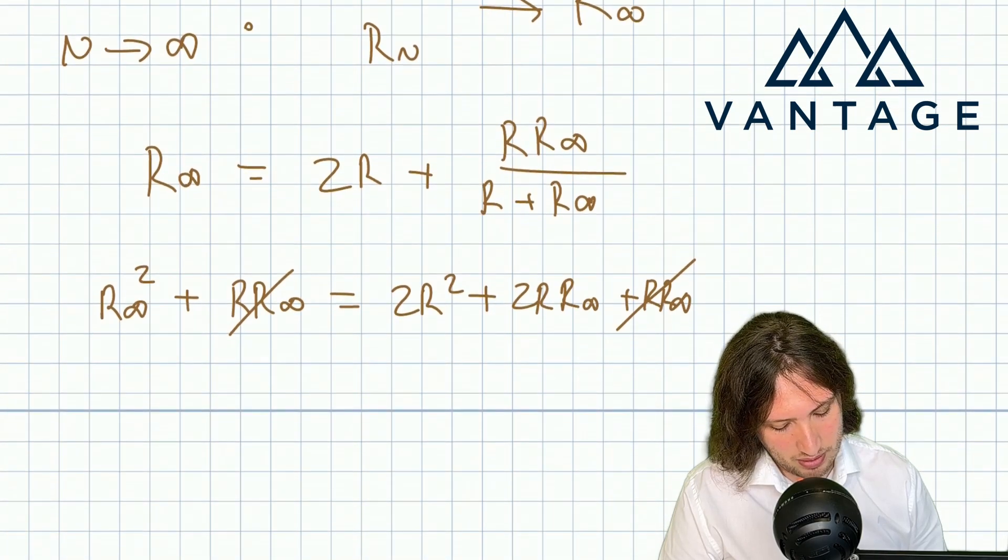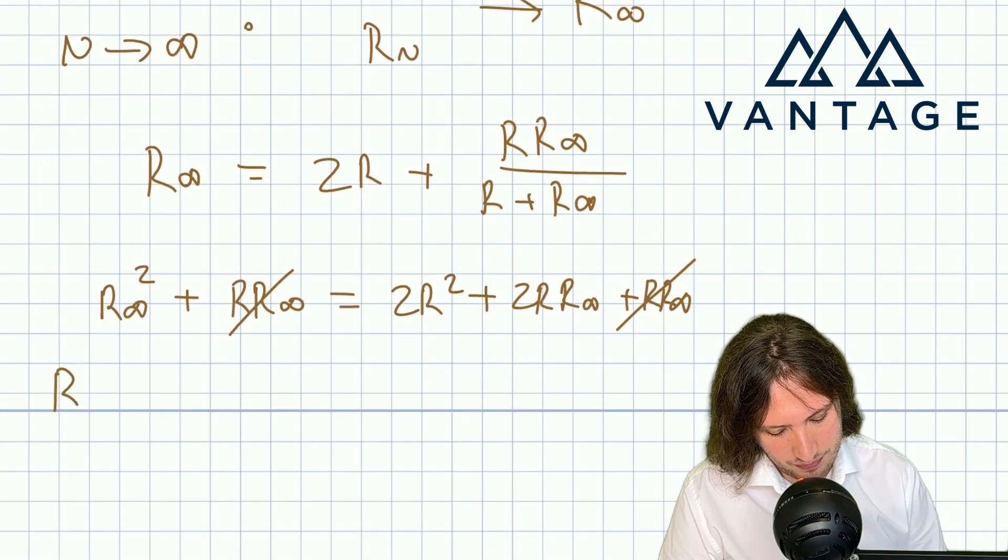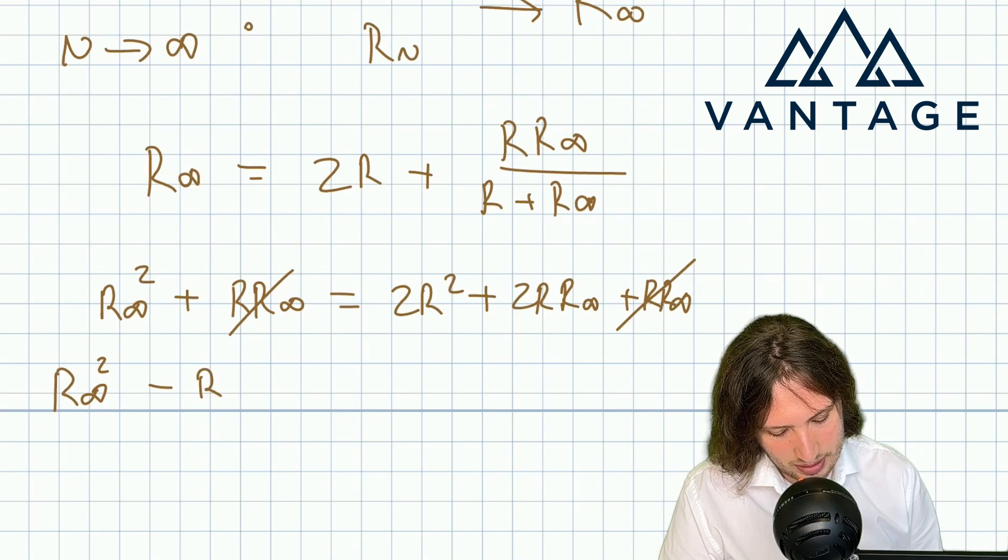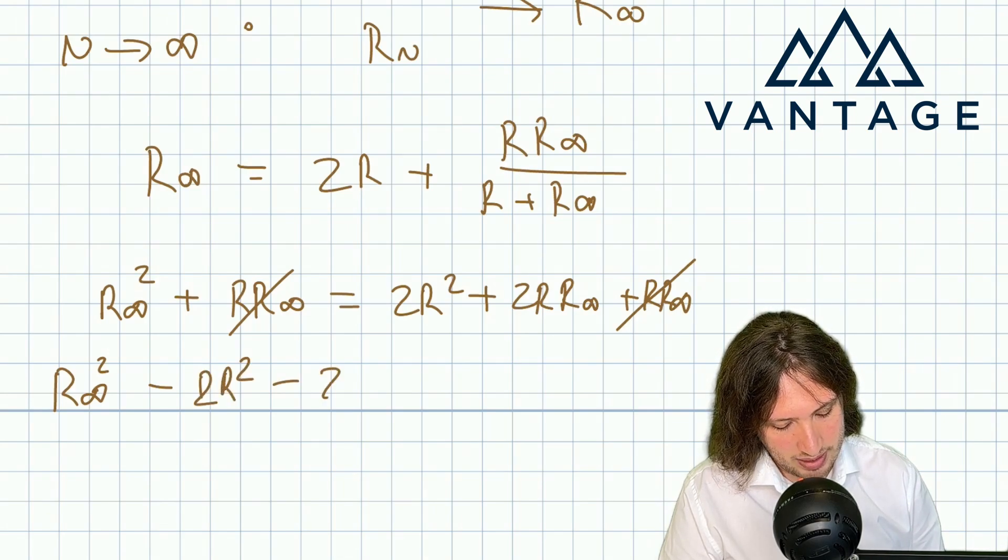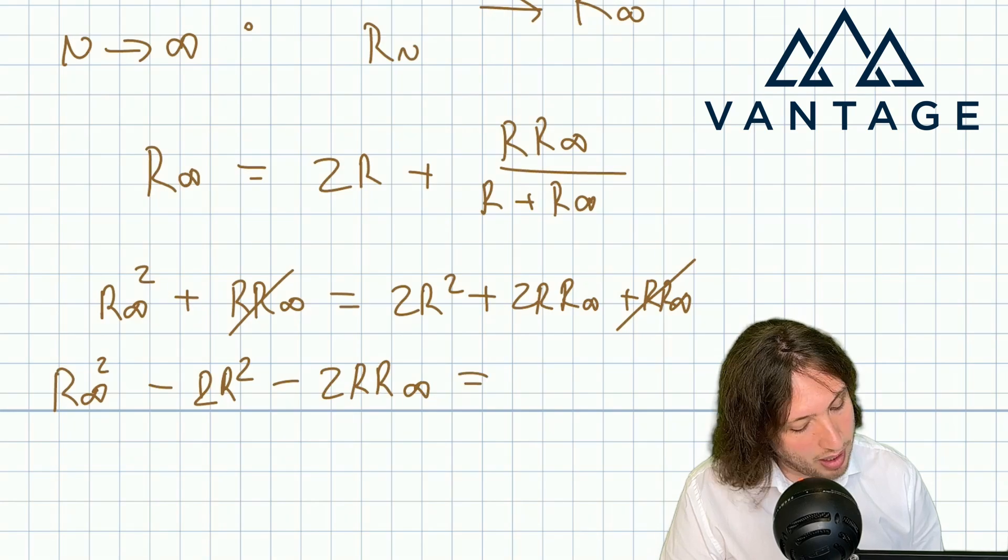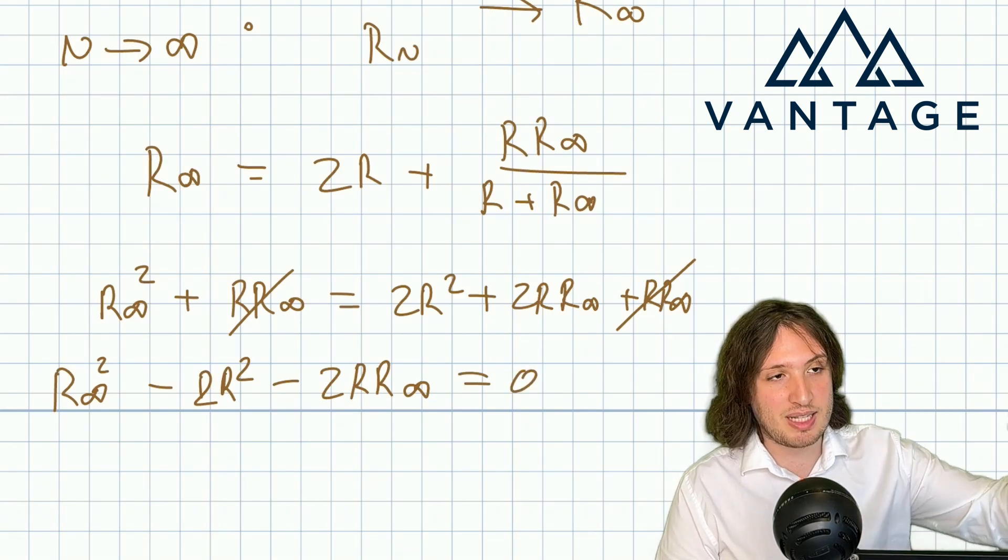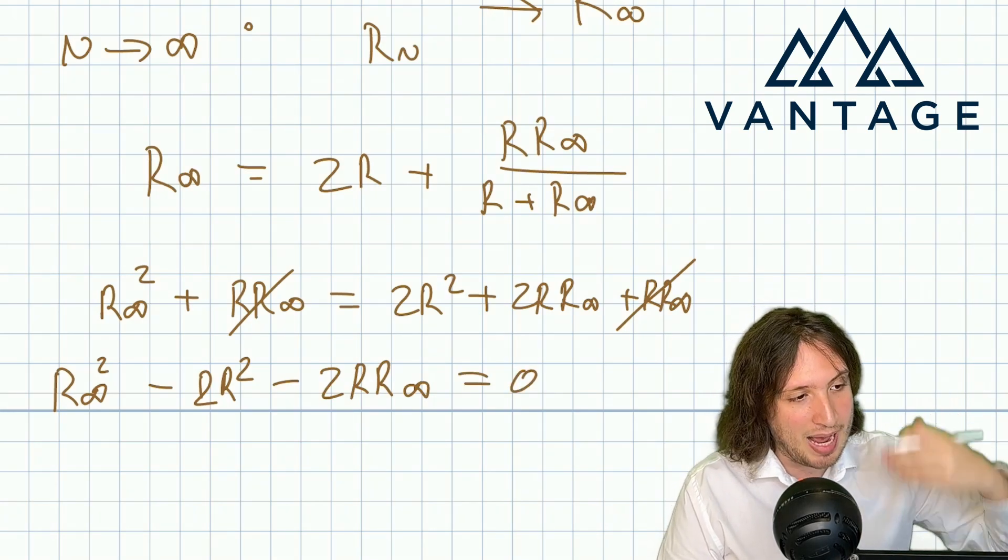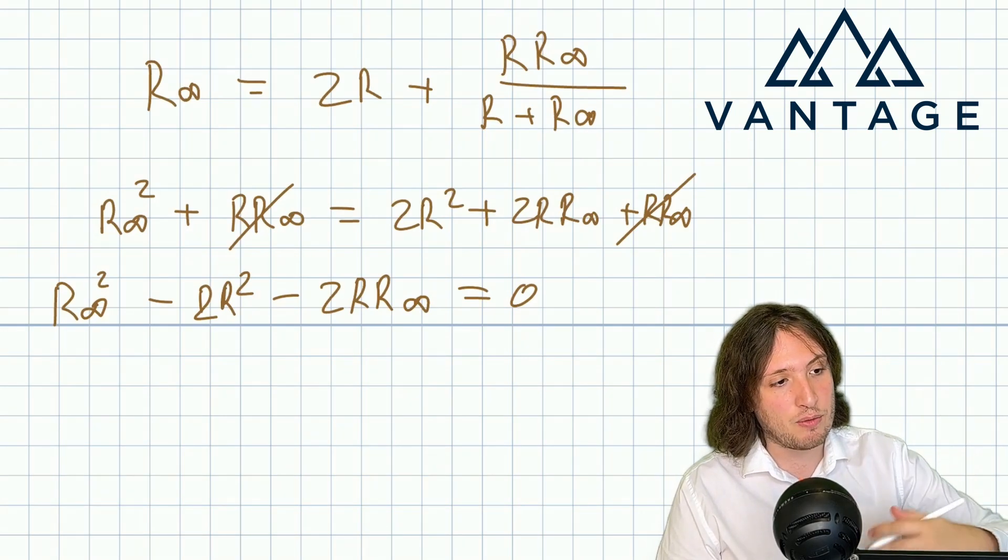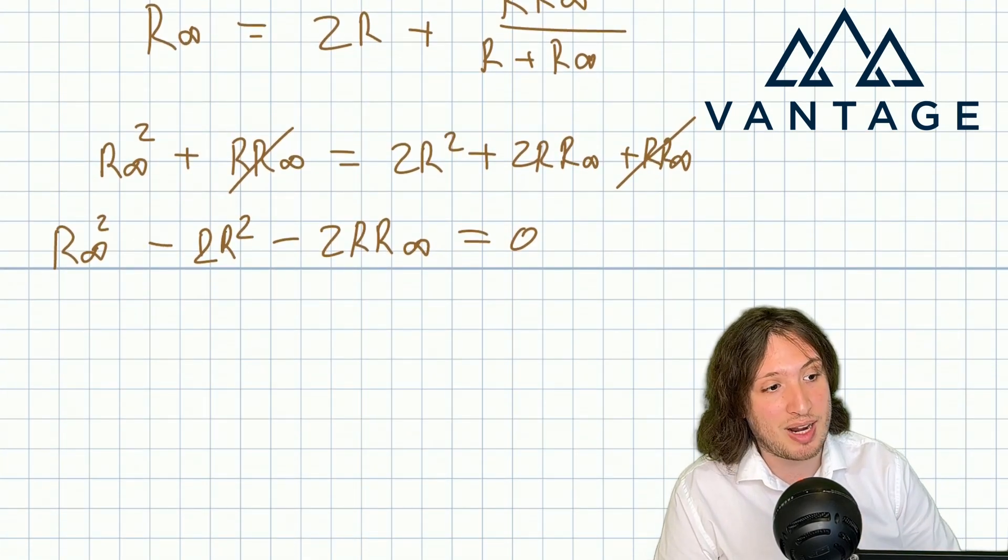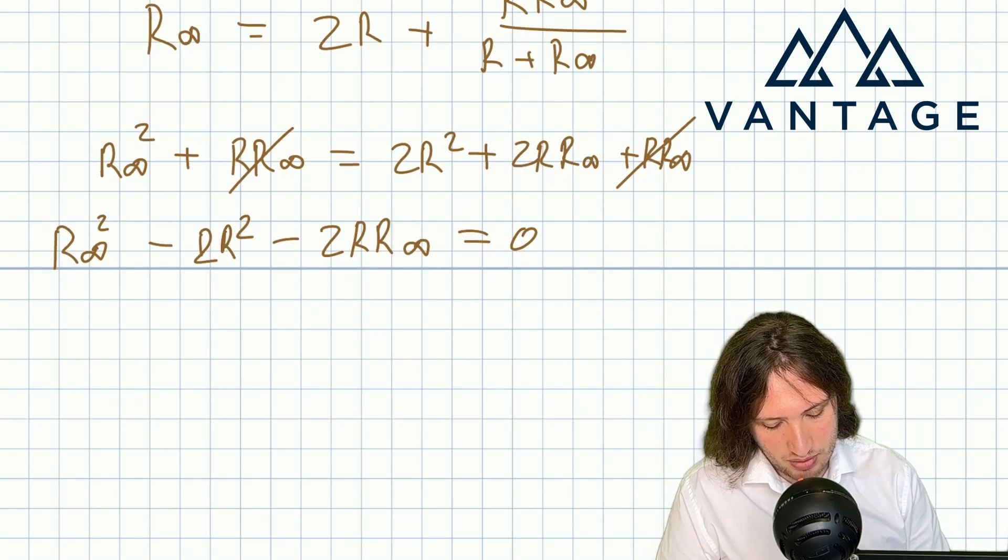Actually these go and I've just got, what have I got? I've got R infinity squared minus 2R squared minus 2R times R infinity. So remember R is a constant, it's the resistance of each resistor, that's something we're happy to feature in our answer. So what we want to solve for is R infinity. Well this is just a quadratic in R infinity.